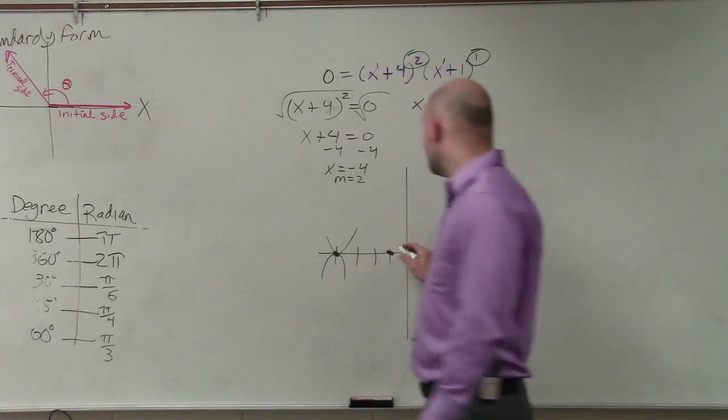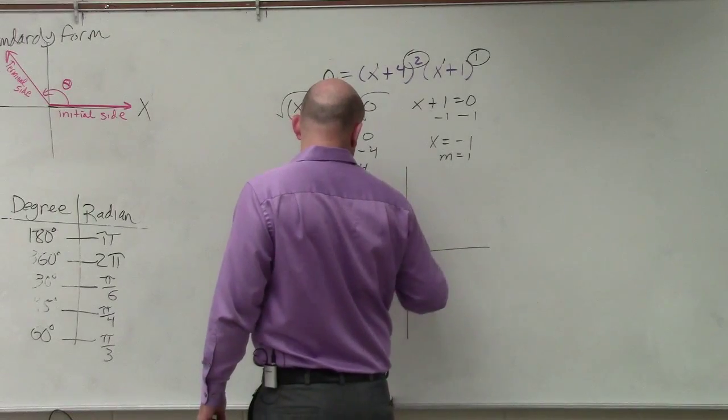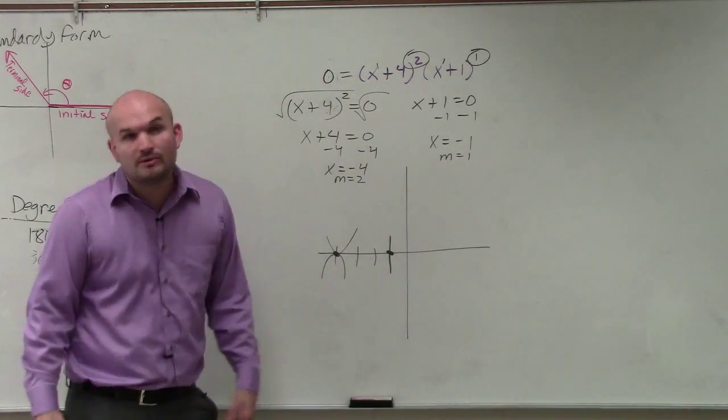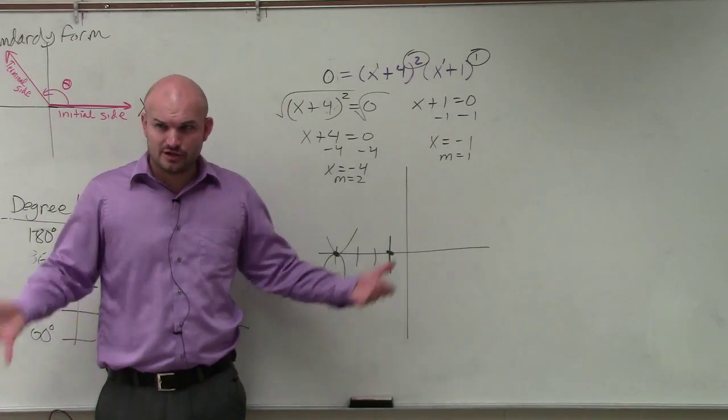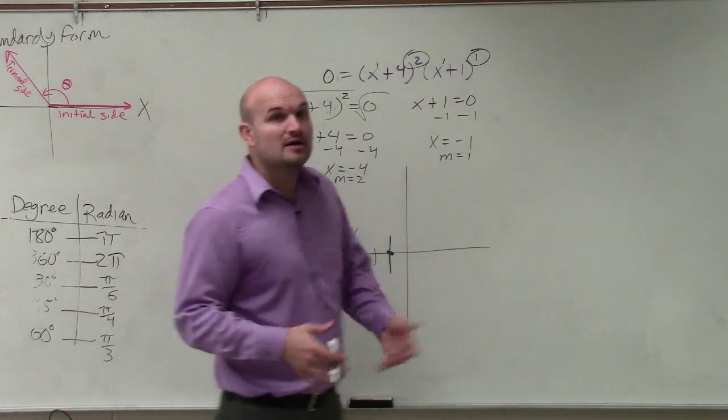And at negative 1, we know that the graph is going to cross. We don't know how it's going to cross, but we know it's going to cross. Does everybody understand that? That was in your 5-1 notes last class period, for multiplicity, right?